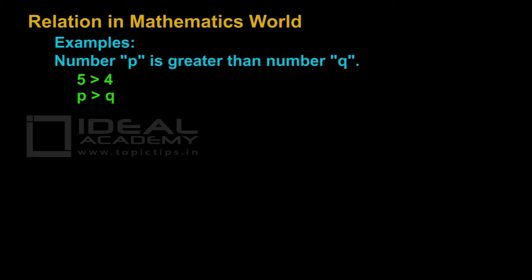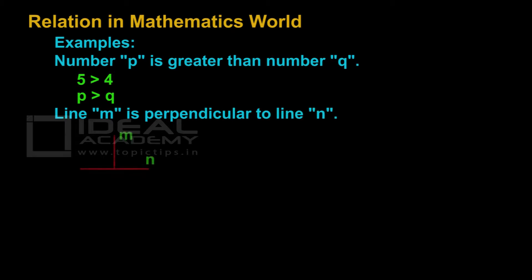Similarly, when we say line M is perpendicular to line N, here also we see there are two identities involved — line M and line N — and there is a property: both lines are perpendicular to each other. When we say A is a subset of B, here also there are two identities involved, and the pattern is that A is a subset of B.